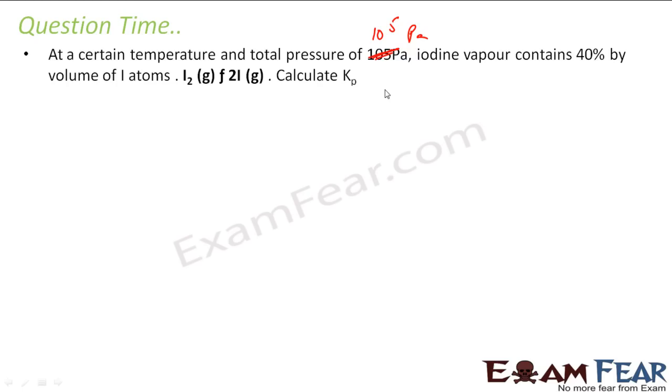So I have my iodine gas and iodine atoms. Iodine gas has 60% and this guy is 40%. So total partial pressure is 10 to the power 5.